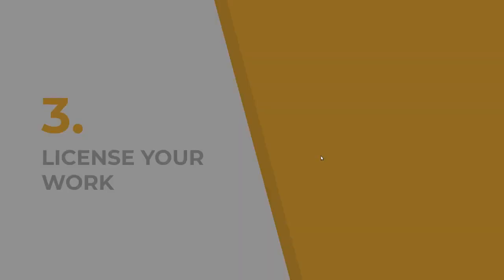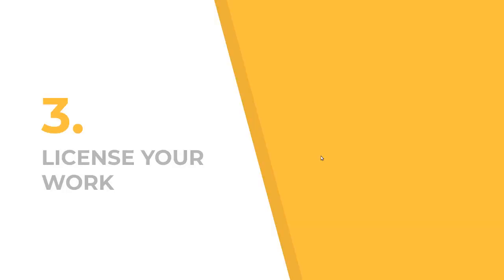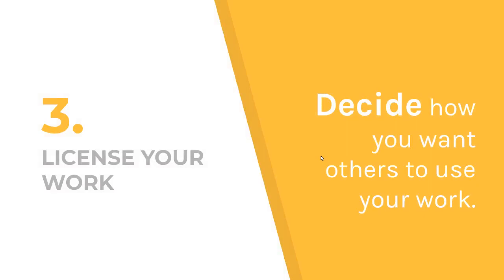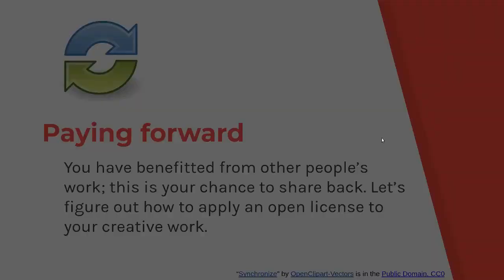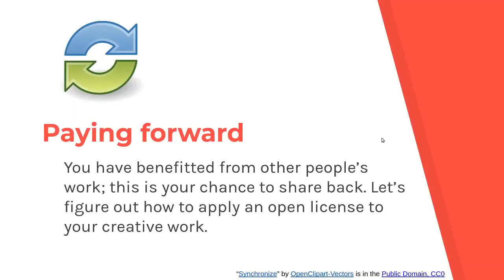Finally, the third step is to assign a license to our content or work. We must decide how we want others to use our creations. From here arise the terms of paying forward or giving merit to the initial creators. Now we have the opportunity to assign merit to the original author. So let's find how to apply for our open license.